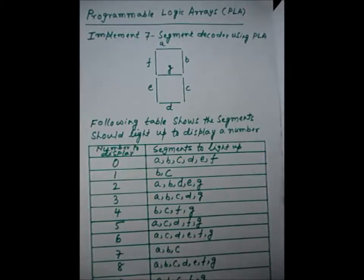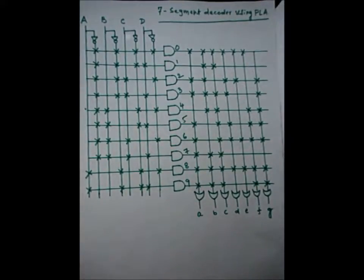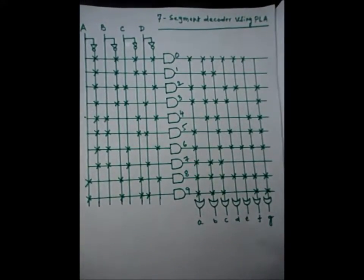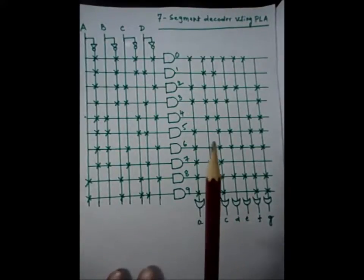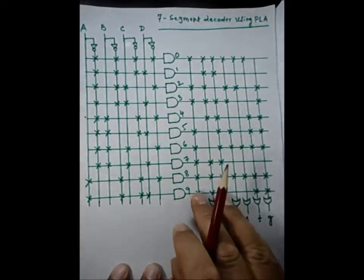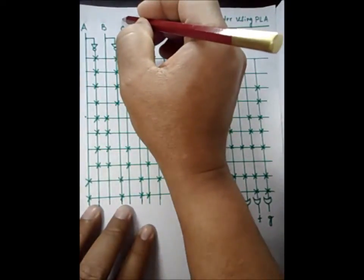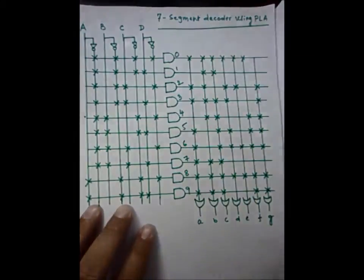According to that table, we use the PLA to drive the required LEDs — A, B, C, D up to G — for whichever digit we want to display. This is the PLA. The input variables are given here. For example, if I give the input 0 0 0 0 1 0, that means digit two should be displayed.